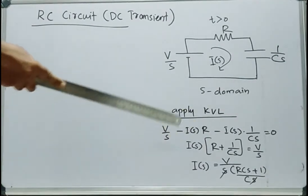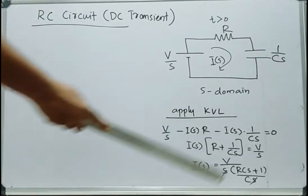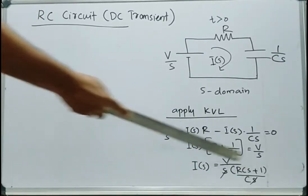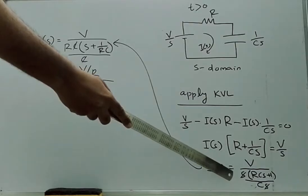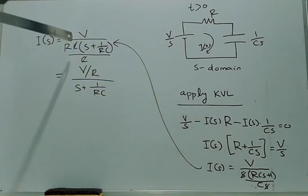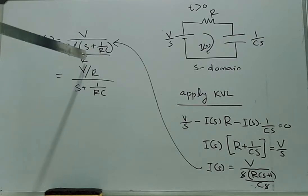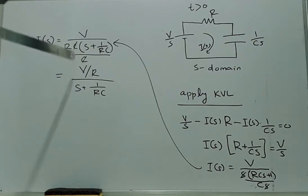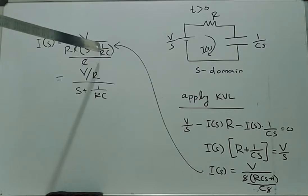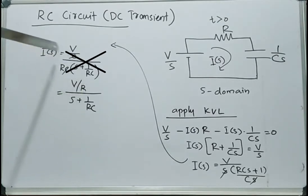Taking I(S) outside from these two terms, this equation becomes I(S) times (R plus 1/CS) is equal to V/S. Therefore, I(S) is equal to V/S times CS divided by (RCS plus 1), with S getting cancelled. The final expression for I(S) can be obtained as (V/R) divided by (S plus 1/RC).